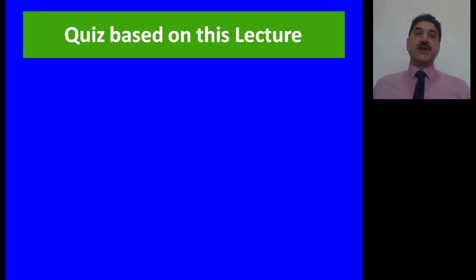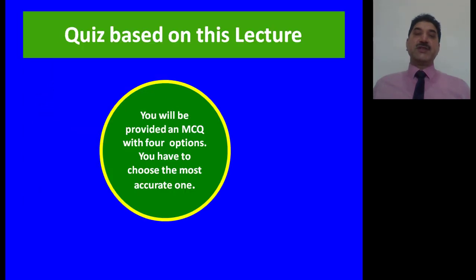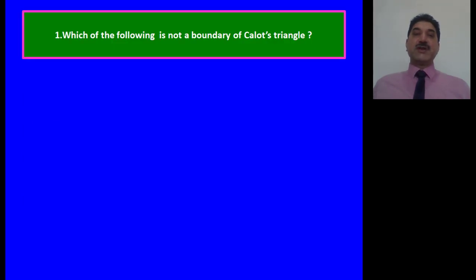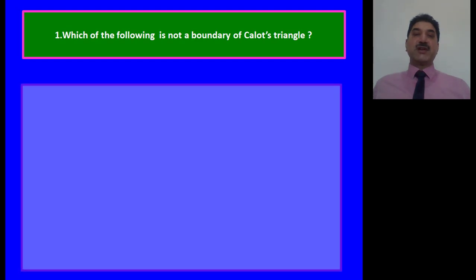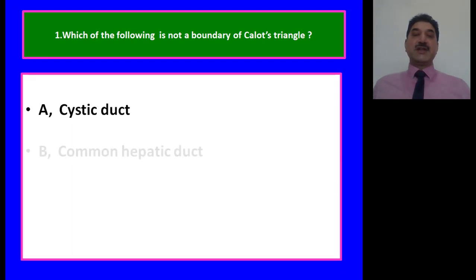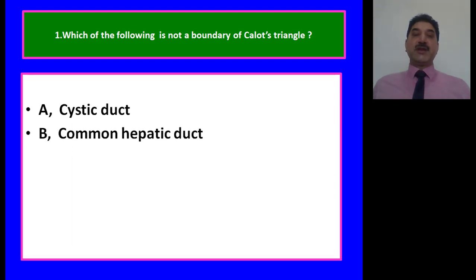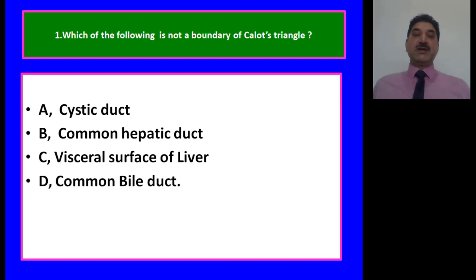Quiz: Which of the following is not a boundary of Calot's triangle? Options: cystic duct, common hepatic duct, visceral surface of liver, common bile duct. The answer is D — common bile duct does not form a boundary of Calot's triangle.